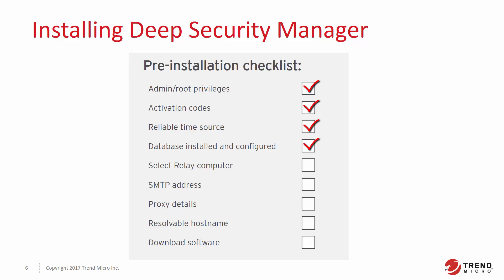A deployment requires at least one Deep Security relay. A relay is a Deep Security agent with relay functionality enabled. Relays are used to keep the protection on your Deep Security agents and virtual appliances up to date. Trend Micro recommends installing a relay-enabled agent on the same computer as Deep Security Manager to protect the host computer and to function as a local relay. To receive email alerts from Deep Security Manager, you will need to supply your SMTP server IP address.